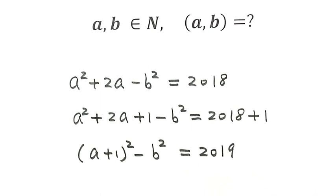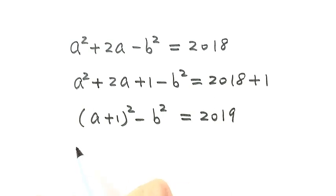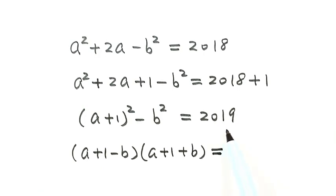The reason we're doing this is to try to have a product on the left-hand side. So now we can write the left-hand side as a product: (a plus 1 minus b) times (a plus 1 plus b). Then for the right-hand side, we prime factorize 2019. So 2019 equals 3 times 673.